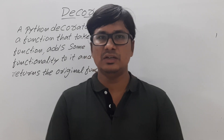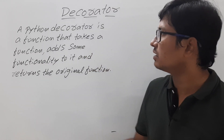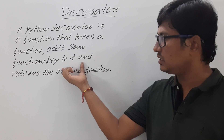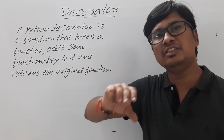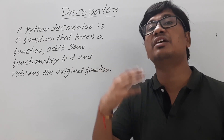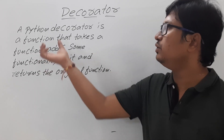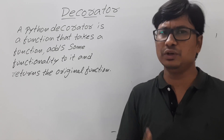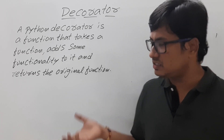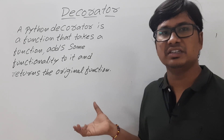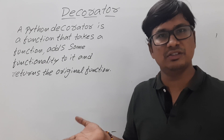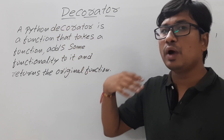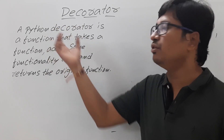Now let me define what is a Python decorator. A Python decorator is a function that takes a function, adds some functionality to it, and returns the original function. So if you have a function and you want to add some extra features or extra functionality to it, you can go for the decorator without modifying the code of the original function. Without modifying the original content of the function, I want to add some extra features — then I will go for the decorator.